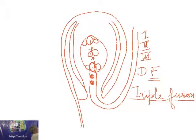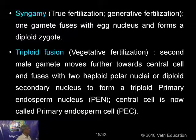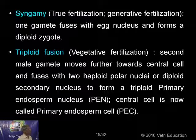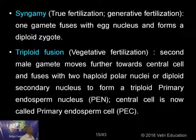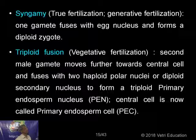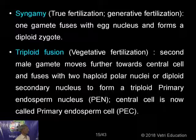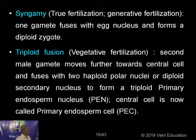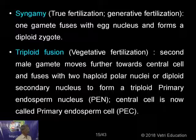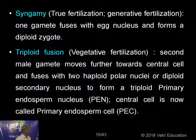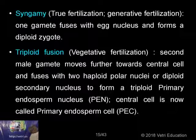This you should understand clearly — what is triple fusion and what is double fertilization, and why two terminologies are used. Syngamy: one gamete fuses with the egg nucleus to form a diploid zygote. Triple fusion — vegetative fertilization: the second male gamete fuses with the two haploid polar nuclei or diploid secondary nucleus to form a triploid primary endosperm nucleus, called PEN. This primary endosperm cell is the central cell now.